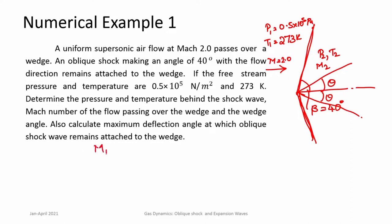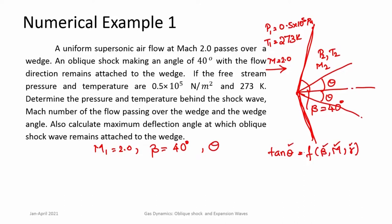Mach number M1 = 2.0 and oblique shock angle beta = 40 degrees are given. Theta can be calculated directly using the M-theta-beta relation: tan(theta) is a function of beta, Mach number, and gamma — all of which are known. The theta found here is the semi-half angle, so the full wedge angle is 2*theta, which turns out to be 21.24 degrees. This can be read directly from the charts.